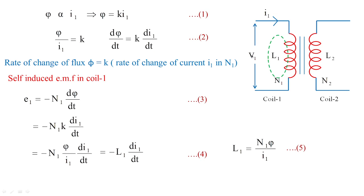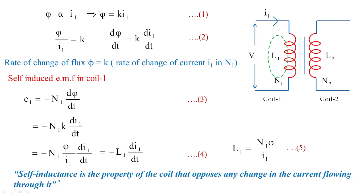Similarly, if we have the source voltage V2 placed in coil 2 and current I2 is flowing in coil 2, and we need to estimate the self-inductance of coil 2, then the formula will be L2 equals N2*phi/I2. The self-inductance is the property of the coil that opposes any change in the current flowing through it, as deduced from equation 5.